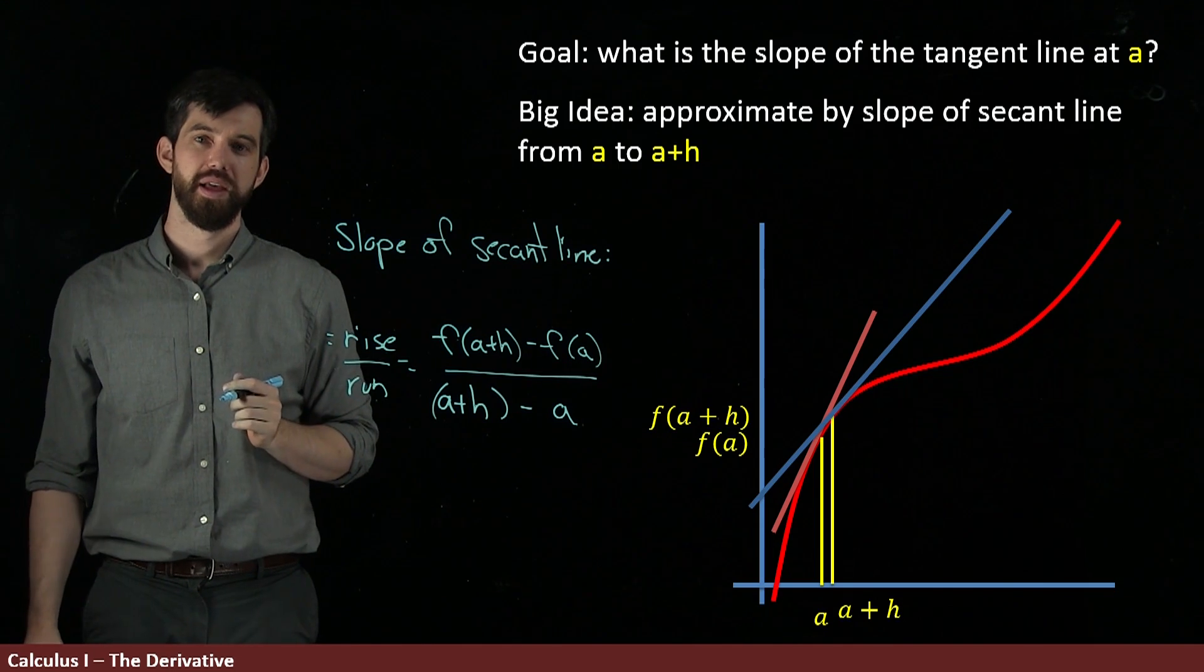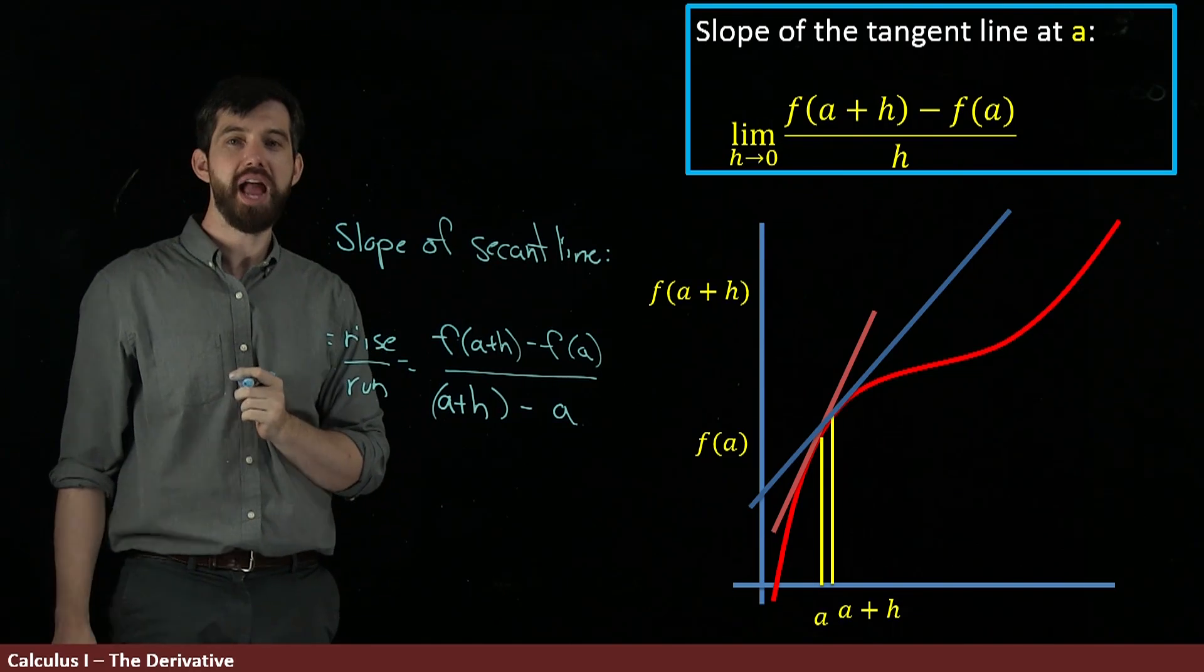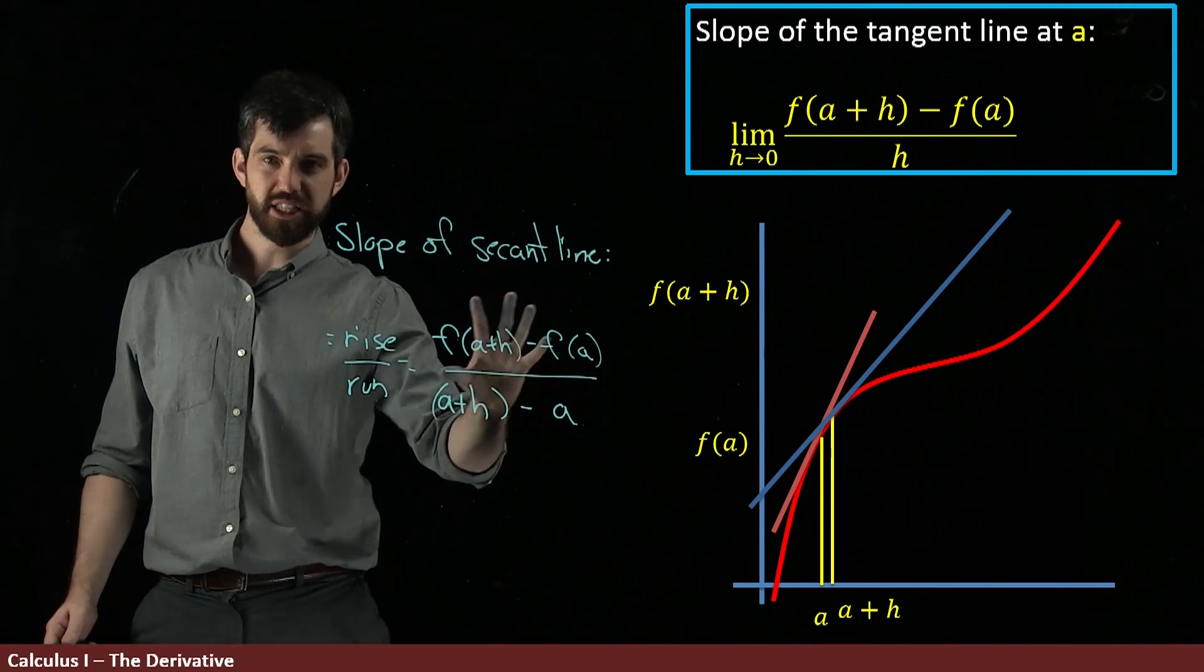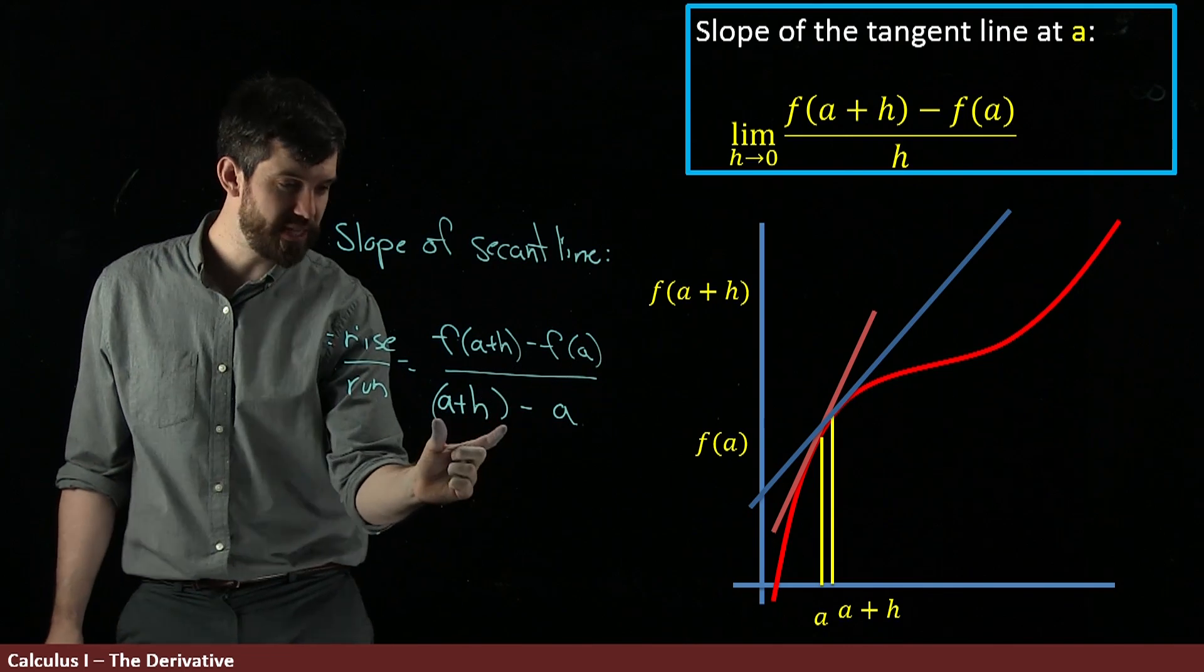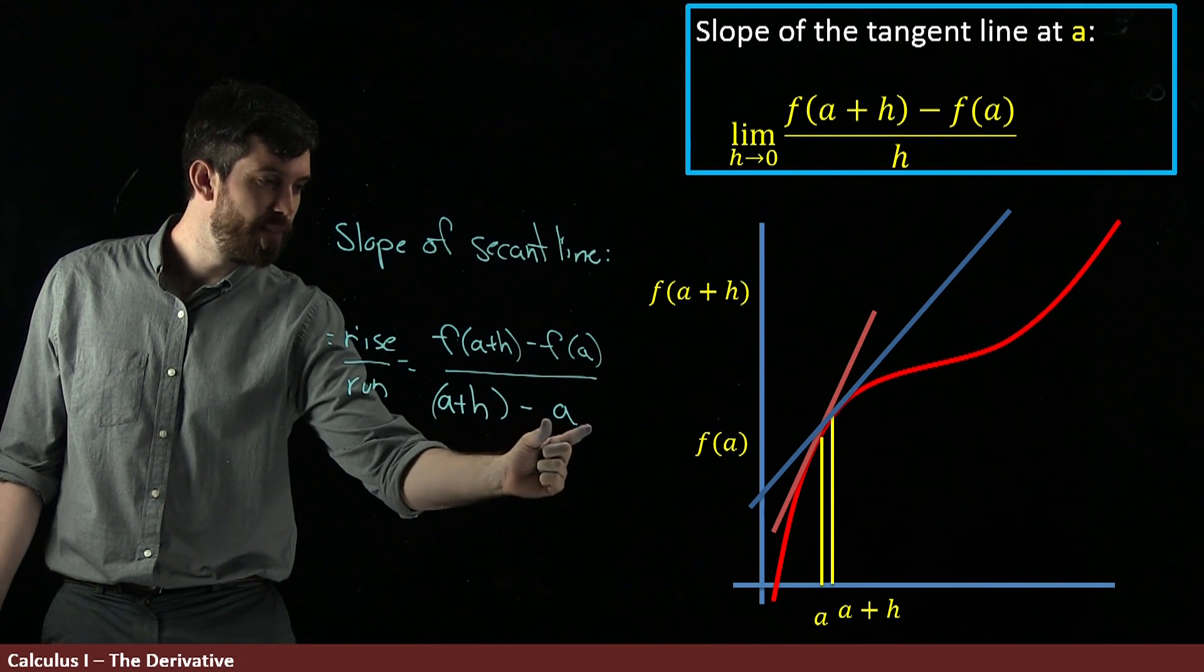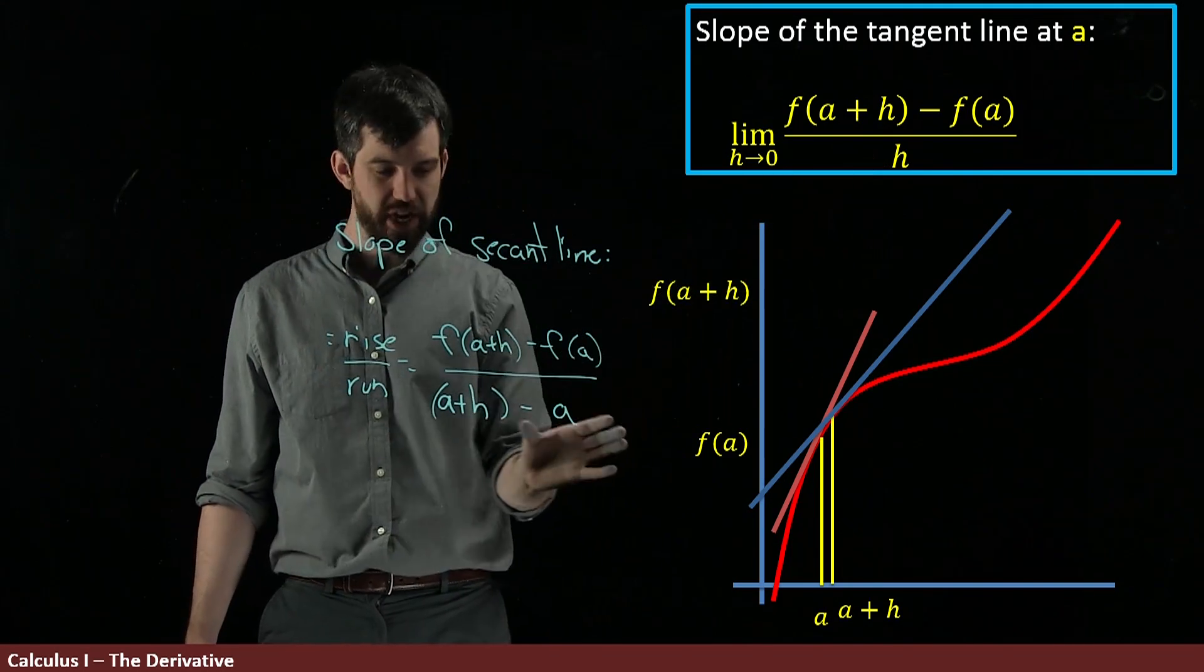So that's my definition. I'm going to define it like this. The slope of the tangent line at a is this expression we just computed, which is the slope of the secant line. Notice a plus h minus a, that's equal to just h. So I clean up the bottom a little bit there and I just put a single h there.